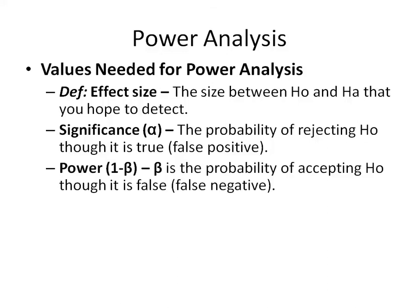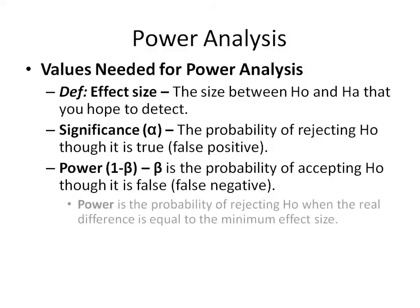We need to know the power, which, if you recall from earlier lectures, is 1 minus beta, where beta is the probability of accepting the null hypothesis even though it's false, also a false negative. So power is the probability of rejecting the null hypothesis. Power can be thought of as the probability of rejecting the null hypothesis when the real difference is equal to the minimum effect size.